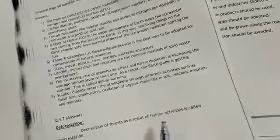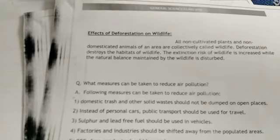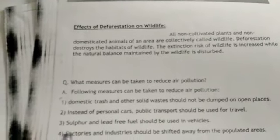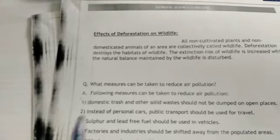The next question is 4.7: what is deforestation and explain its effects on wildlife? Destruction of forests as a result of human activities is called deforestation. All non-cultivated plants and non-domesticated animals of an area are collectively called wildlife. Deforestation destroys the habitat of wildlife, increases the extinction rate of wildlife, and destroys the natural balance maintained by wildlife.